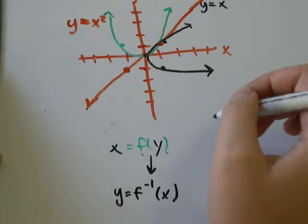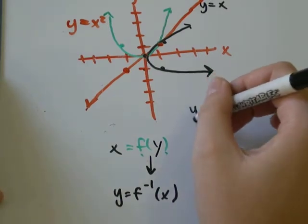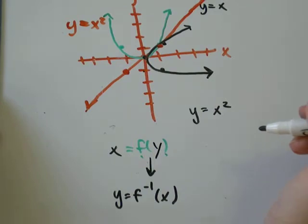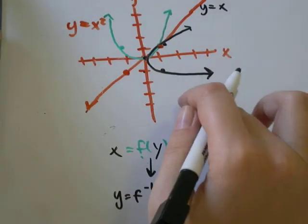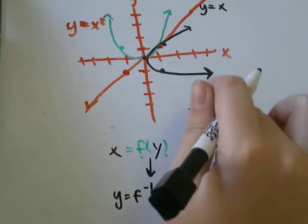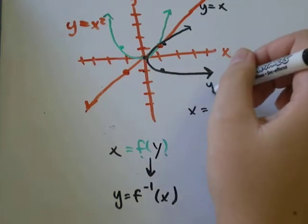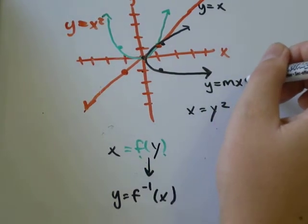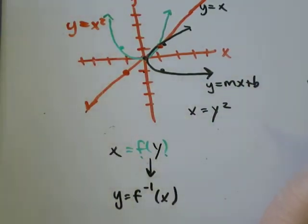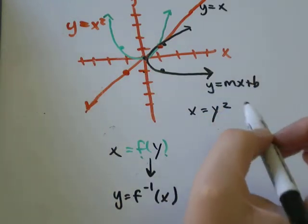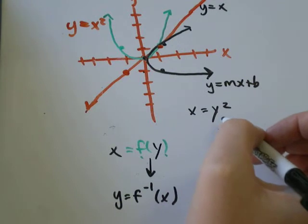So, I originally had y equals x squared. That's the parabola that I drew in green. So, now I'm going to replace my y with x and my x with y. Now, I've got x equals y squared. So, when we're graphing, we like stuff to say, you know, y equals mx plus b or whatever in the case of a line. We want to say y equals something.